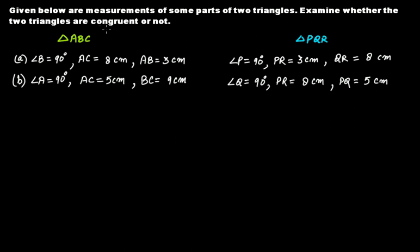Given below are measurements of some parts of two triangles — triangle ABC and triangle PQR. We have to examine whether the two triangles are congruent or not. On the basis of these measurements, we need to determine whether triangle ABC is congruent to triangle PQR.